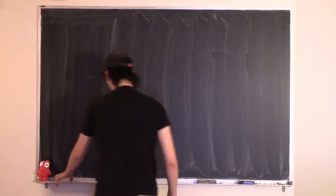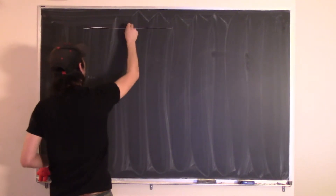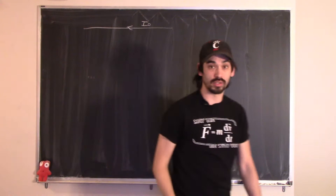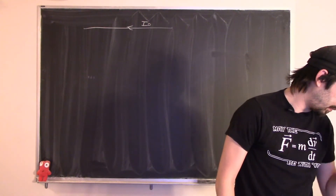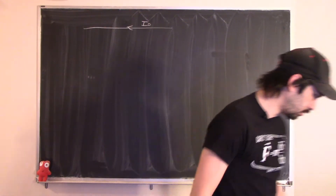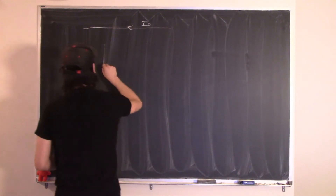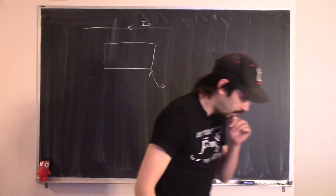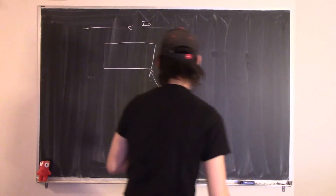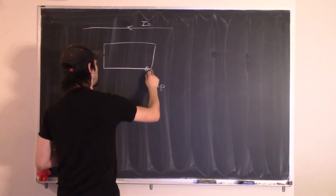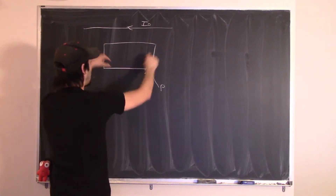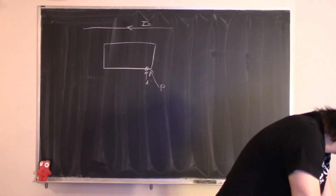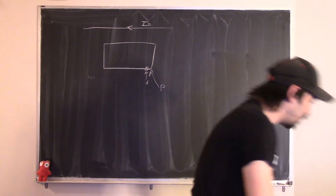Here's what we have for this problem. We have some infinitely long wire carrying current I-naught going to the left. Then you have some rectangular loop with resistivity rho and cross-sectional area A — that's the cross-sectional area of the wires that form the loop.